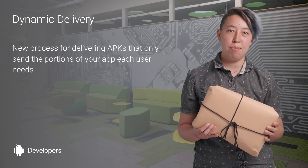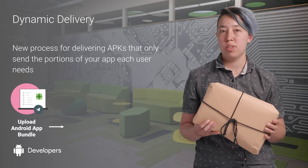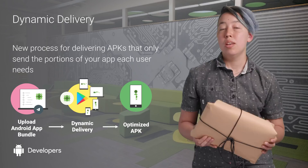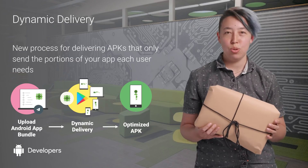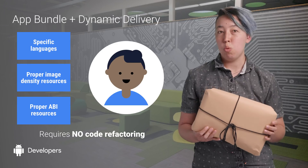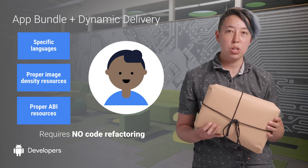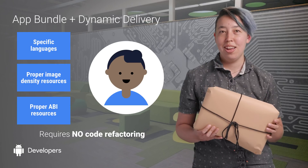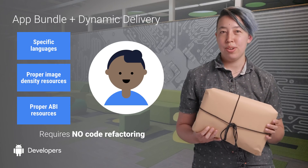When Google Play has your app bundle, it uses a new process for delivering APKs called dynamic delivery. Put simply, it only sends the portions of your app that each user needs. Just using the new app bundle format will automatically give your users APKs with only the language, screen density, and ABI resources that they require. And it requires no code refactoring from you.